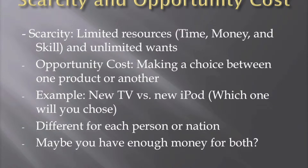We don't have infinite money, so we can't buy everything we want. That's where opportunity cost comes in — it's basically the consumer making a choice between one product or another based on their resources. An example would be: do I get a new TV or do I get a new iPod? You have to choose because you don't have enough money for both. But opportunity cost is different for each person in a nation — maybe they do have enough money for that.